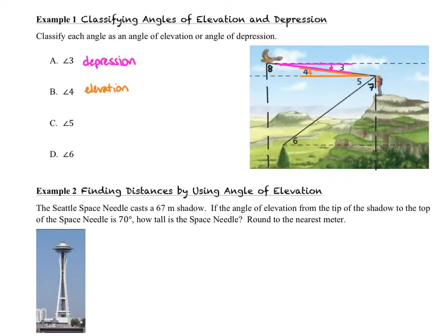Question C is asking us about angle 5. Angle 5 starts out at the line of sight of the man with the binoculars and the horizontal line there, and goes downward towards the top of the tree. So that is an angle of depression. Next is angle 6. From the top of the tree going horizontally, we see the beginning of angle 6, and it goes upward toward the diagonal that looks at the man with the binoculars. So it is also an angle of elevation.